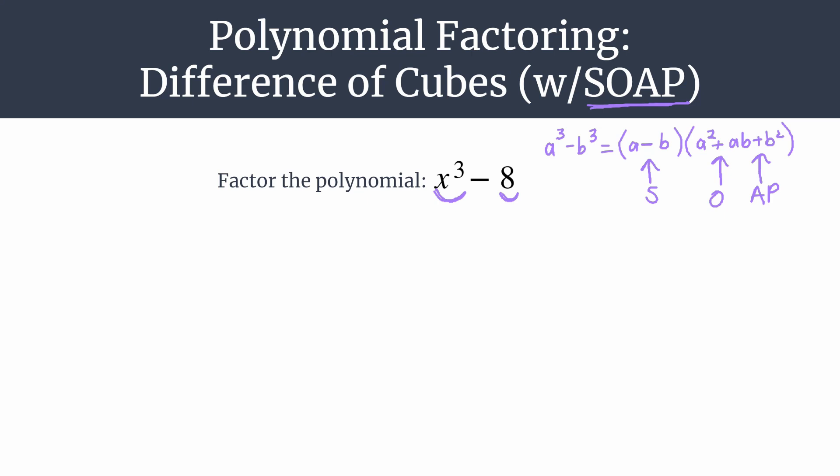Now we want to use this template that we've recalled to factor our polynomial. You can see x cubed is in the a cubed spot. Let's define a to be x, so wherever a is in our template, we'll put an x. And then we see our 8 is our b cubed. Ignore that minus sign. We've already taken care of that with our SOAP. Our template accounts for that. So all we have to do is take the cube root of 8. So we know our b term is going to be 2. And from here, we can simply substitute in our a and our b into the template, and we'll have our polynomial factored.